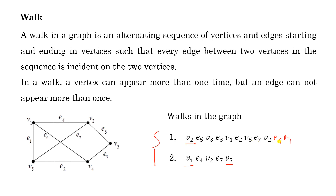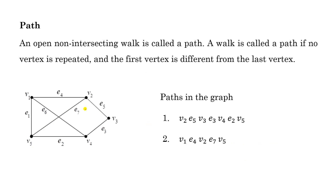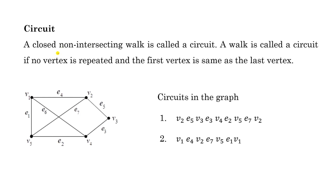A path is an open, non-intersecting walk. Open means the first vertex is different from the last vertex; non-intersecting means no vertex is repeated in between. Alternatively, a walk is called a path if no vertex is repeated — then the first vertex will automatically differ from the last. For this graph, examples of paths include: v2, e5, v3, e3, v4, e2, v5.